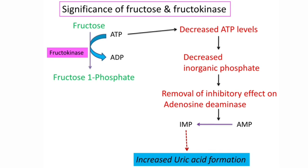Because fructokinase is not regulated by insulin, fructose rapidly enters the cell where it is metabolized to fructose-1-phosphate, which requires ATP. When more ATP is utilized, the levels of ATP fall in the cell. Low ATP levels increase oxidative phosphorylation, leading to decreased levels of inorganic phosphate. This leads to removal of the inhibitory effect on adenosine deaminase — decreased inorganic phosphate activates adenosine deaminase, which converts AMP into IMP (adenosine monophosphate to inosine monophosphate).